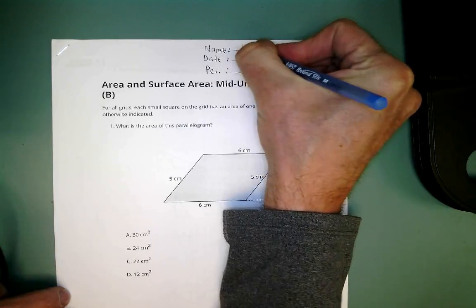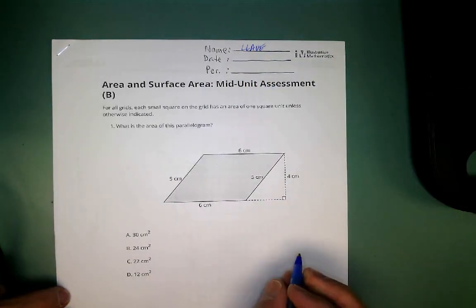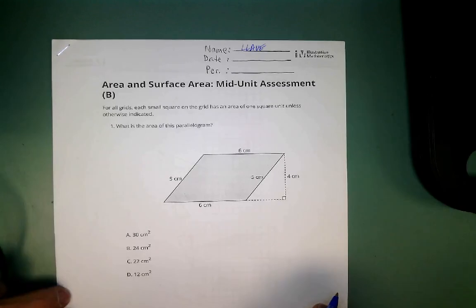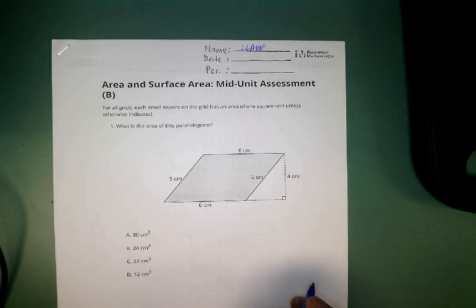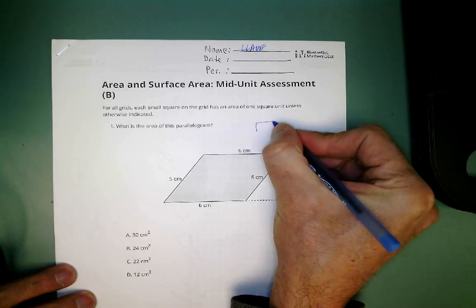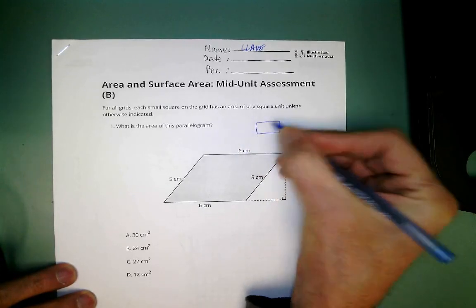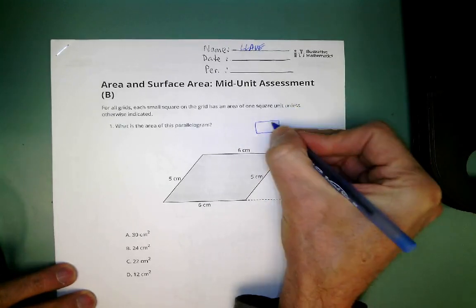First, put your name here — I always put Yahweh because this is a key. This is going to be the answer sheet. On this first page, you just have to figure out the area of this parallelogram. The easiest shape to get the area of is a rectangle.